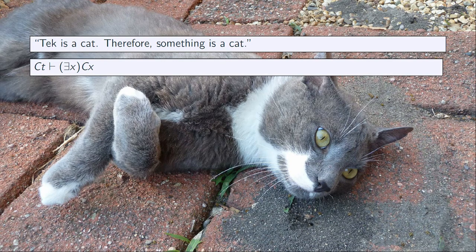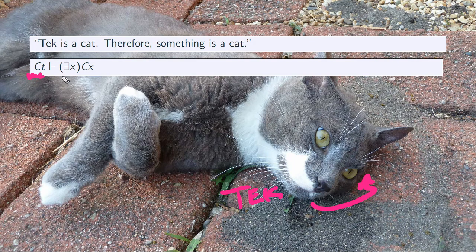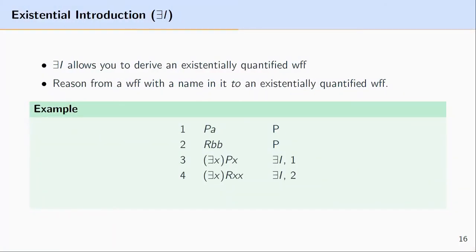More formally, we might write CT, saying that Tech has the property of being a cat. If tech is a cat, then something or someone is a cat. In short, existential introduction allows you to derive or write in the proof an existentially quantified well-formed formula — we reason from a well-formed formula with a name in it to an existentially quantified expression.